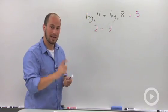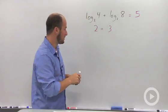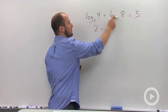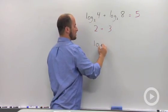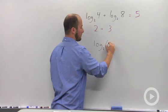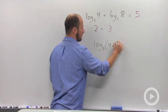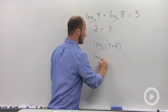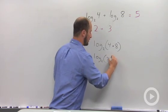What I want to take a look at is what happens when we combine these two together. And to get that reference, I'm going to multiply these two insides and put that inside of a log. So log base 2 of 4 times 8 is log base 2 of 32.